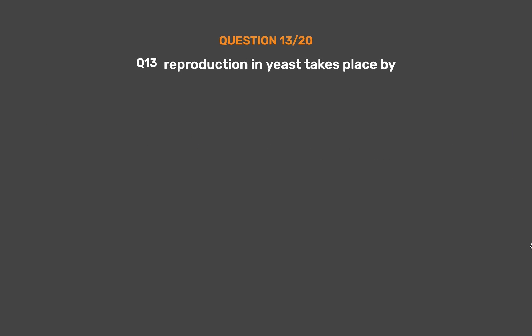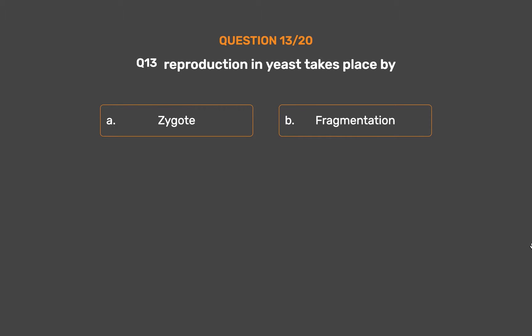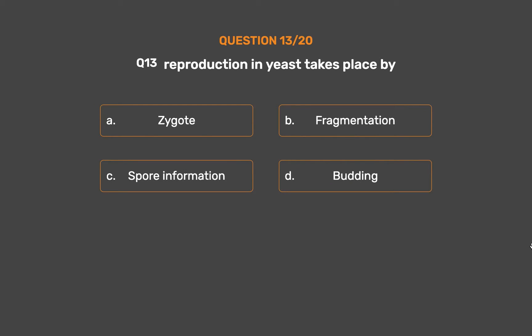Question No. 13. Reproduction in yeast takes place by: Option A – Zygote. Option B – Fragmentation. Option C – Spore formation. Option D – Budding.